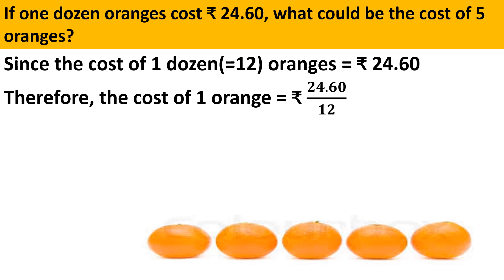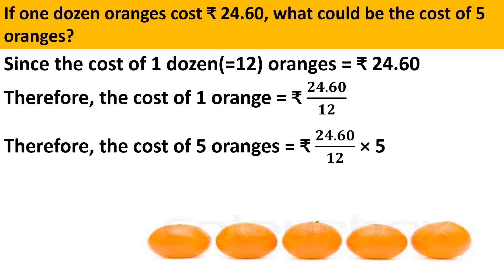We can divide at this stage or wait for the last step. The last step is the cost of 5 oranges. Since the cost of 1 orange equals Rs. 24.60 divided by 12, the cost of 5 oranges equals 24.60 divided by 12, multiplied by 5. Solving this: 12 ones are 12, 12 twos are 24.0, 12 fives are 60. Multiplying 2.05 by 5 gives Rs. 10.25 — the cost of 5 oranges.